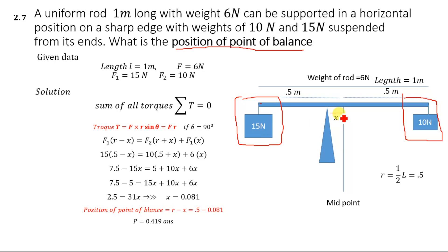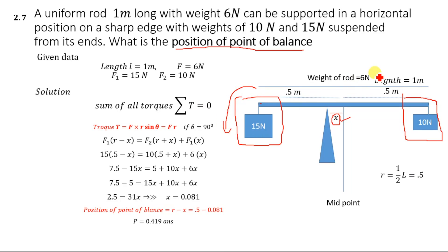Let's suppose the distance between the position of the point of balance and the midpoint is denoted by x. We will determine this value of x using the second condition of equilibrium. The torque produced by the 15 newton weight is anti-clockwise, and the torque produced by the 10 newton weight is clockwise, so the torques on the left side will equal all the torques on the right side.